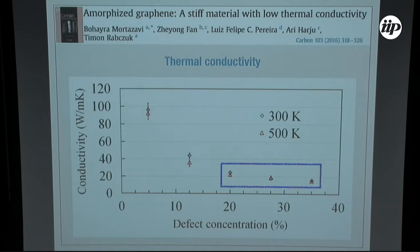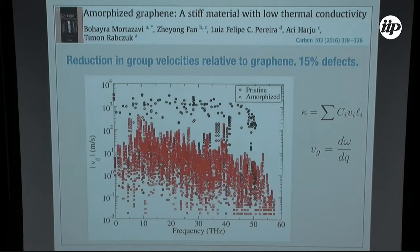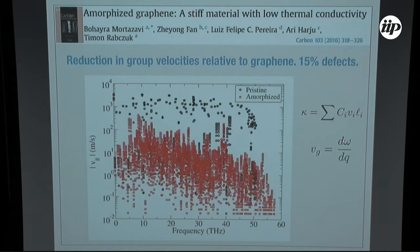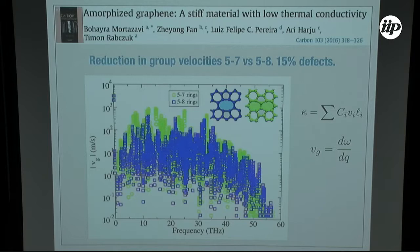We wrote our own code and calculated thermal conductivity as a function of defect concentration. As expected, the thermal conductivity decreases with increasing defects. What's interesting is that for different temperatures the conductivity is almost the same, meaning the conductivity is completely limited by the defects — phonon-phonon scattering is almost unimportant. There is a big reduction: graphene was about 3,000 W/m·K, whereas here you have 100 to about 20 W/m·K. The phonon modes in deformed graphene have much lower group velocities, giving a lower thermal conductivity.